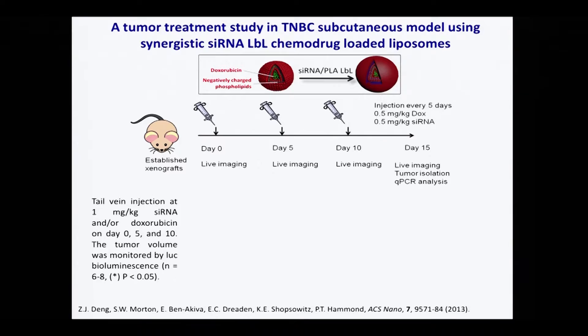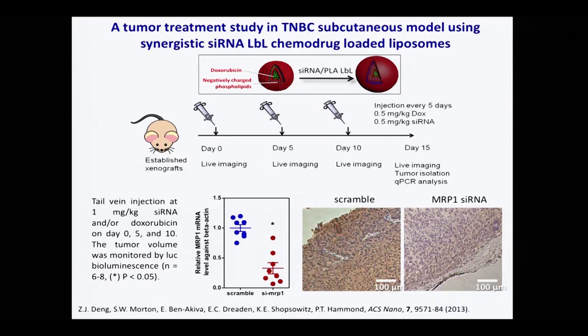In this case, it was a liposome with a net negative charge, onto which we incorporated our layer-by-layer film. This meant that our doxorubicin got coated with siRNA against MRP1, and the outer layer incorporated was hyaluronic acid. When we look at whether we can achieve knockdown in the tumor tissue, we can find that indeed we see a very significant amount of knockdown of MRP1—maybe about 85%—and we can also see this in our stains.